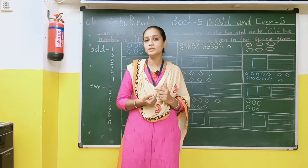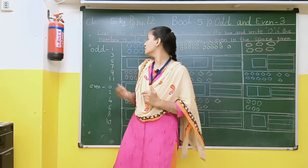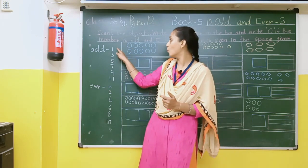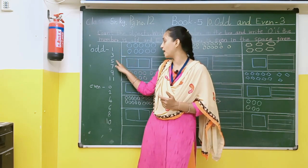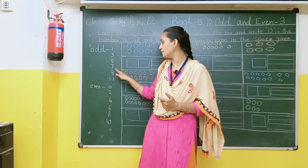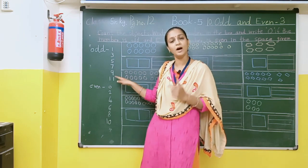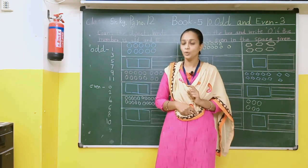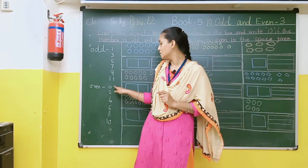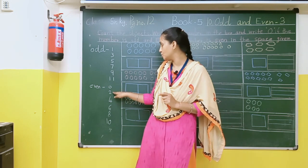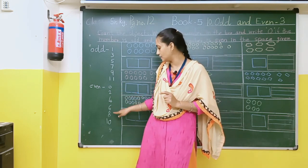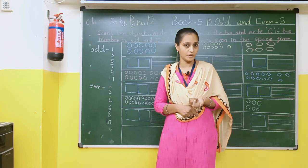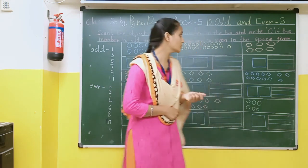Which are the odd numbers? Let's revise. Odd numbers are 1, 3, 5, 7, 9, and 11 are called odd numbers. And which are even? 0, 2, 4, 6, 8, and 10 are called even numbers.